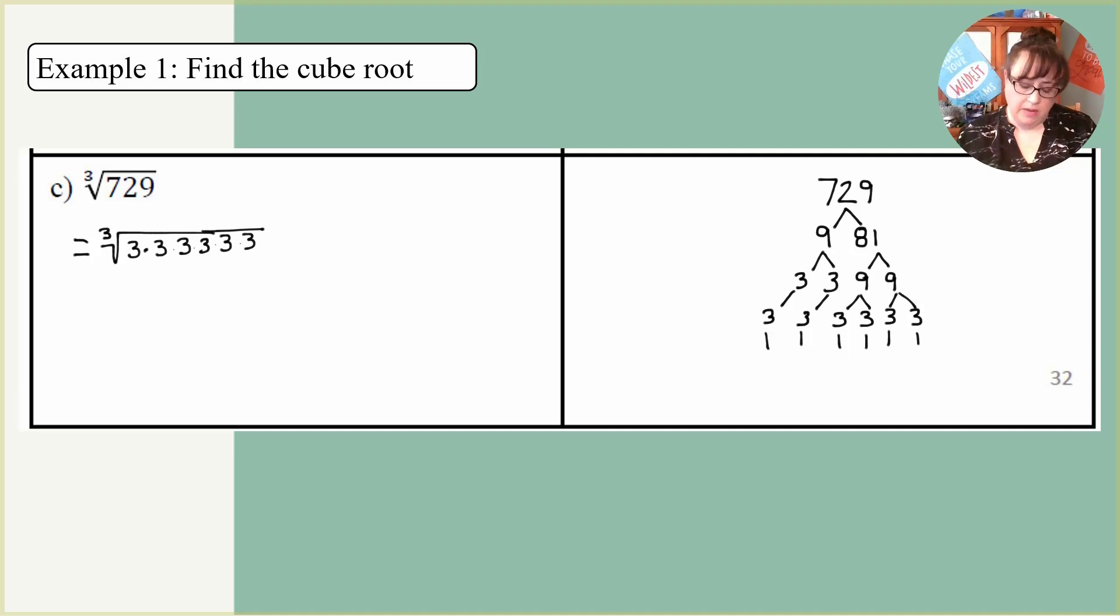And now this time I'm looking for groups of 3 at a time. So here's a group of 3, which means I'm going to write it down once. And then I have another group of 3 right here. So I'm going to write it down another time. So now I have 3 times 3, which is 9.